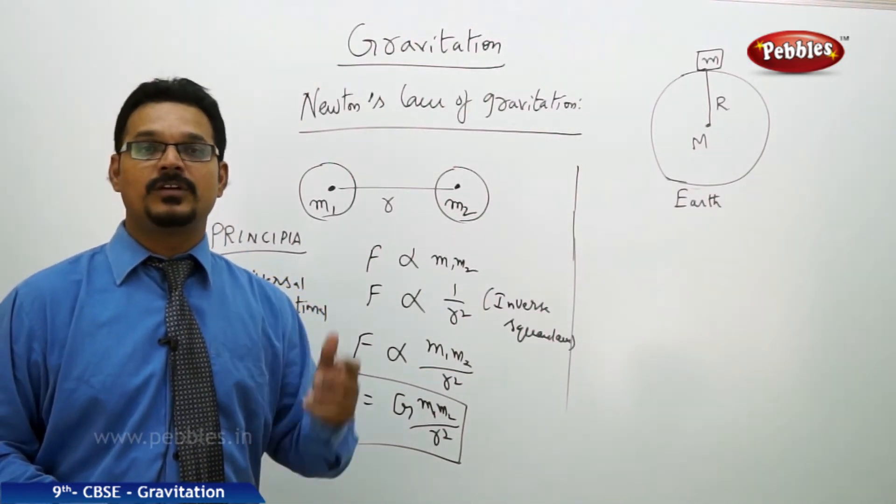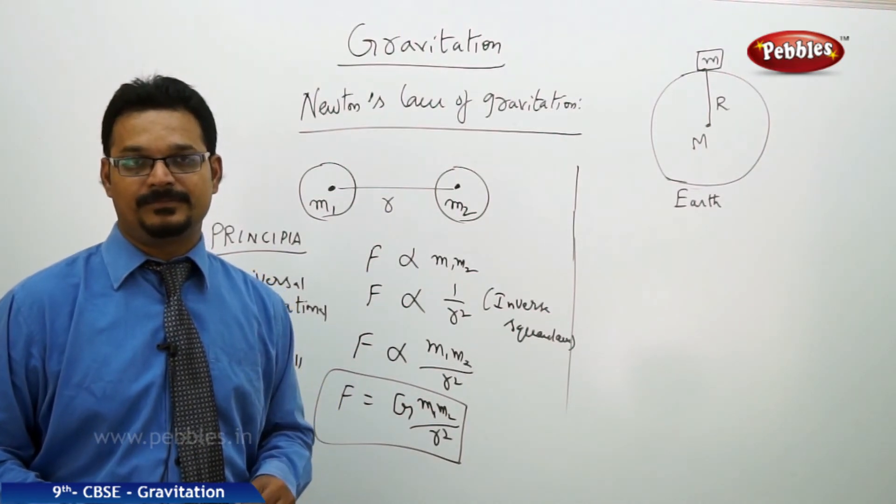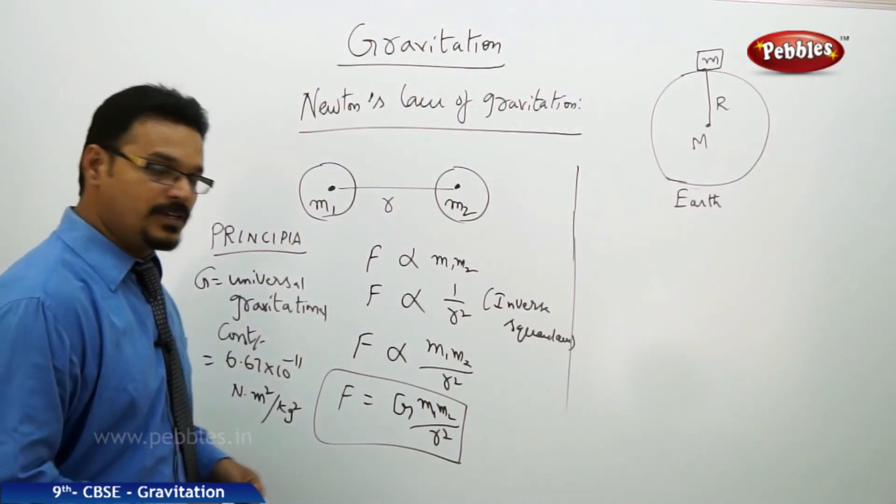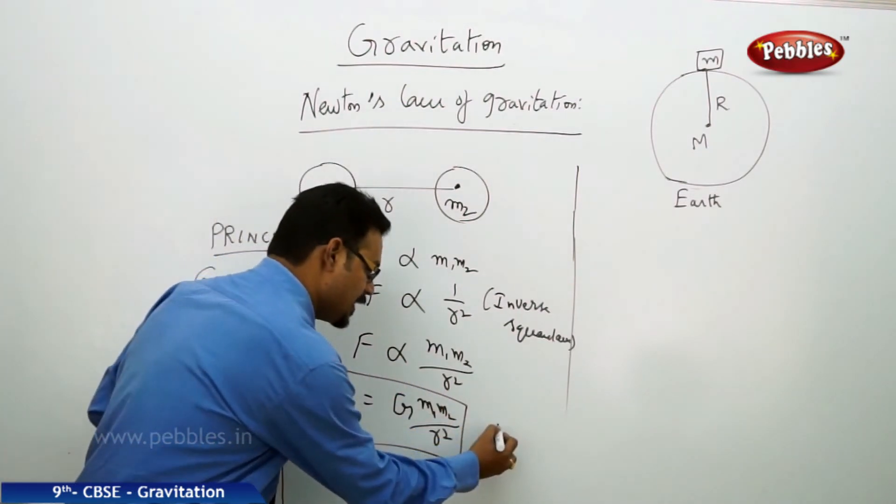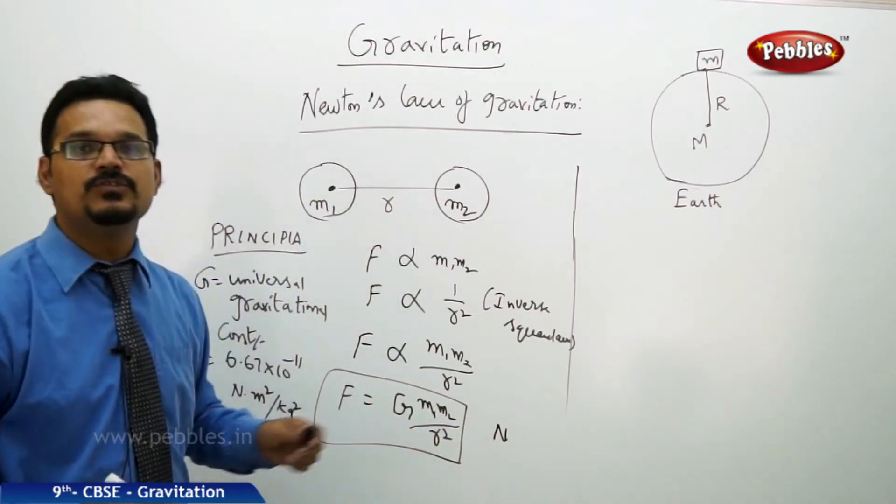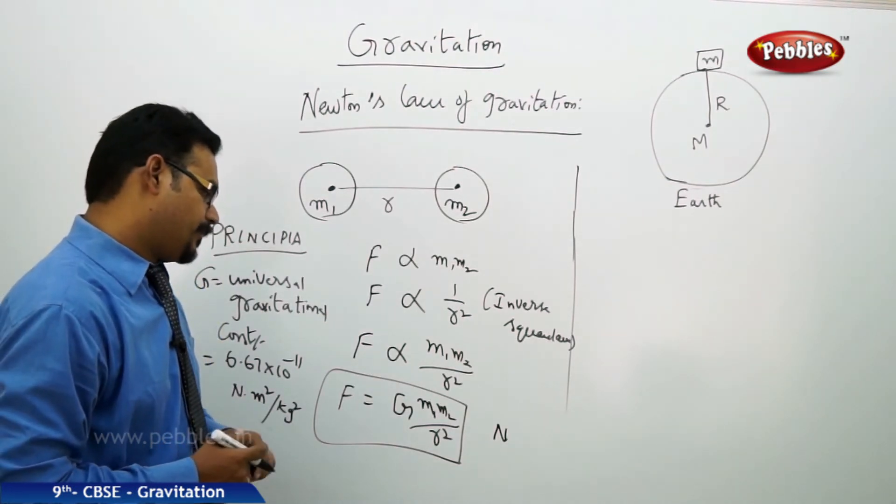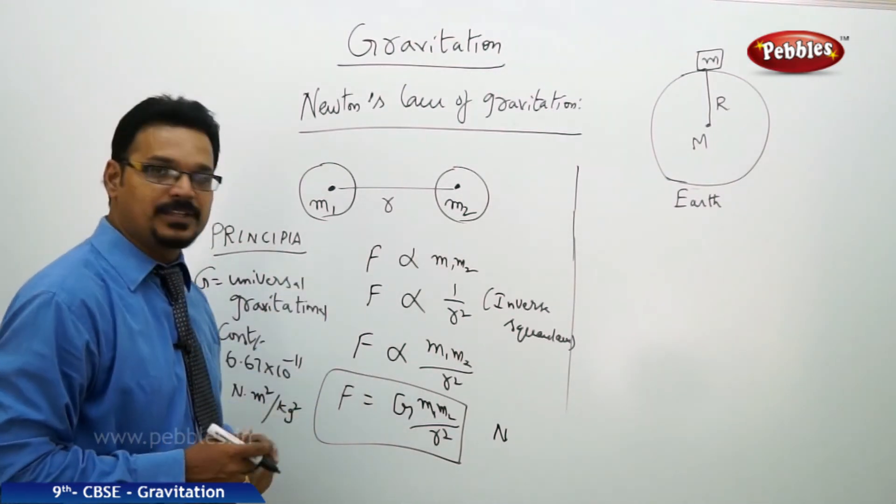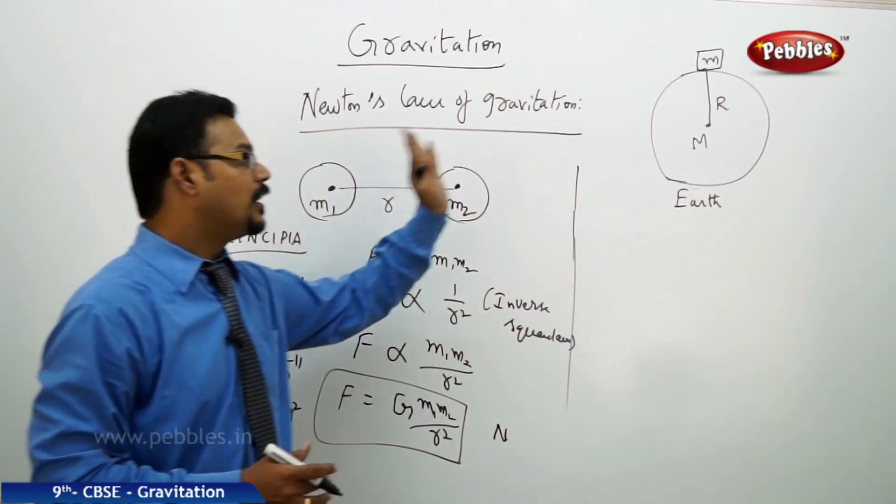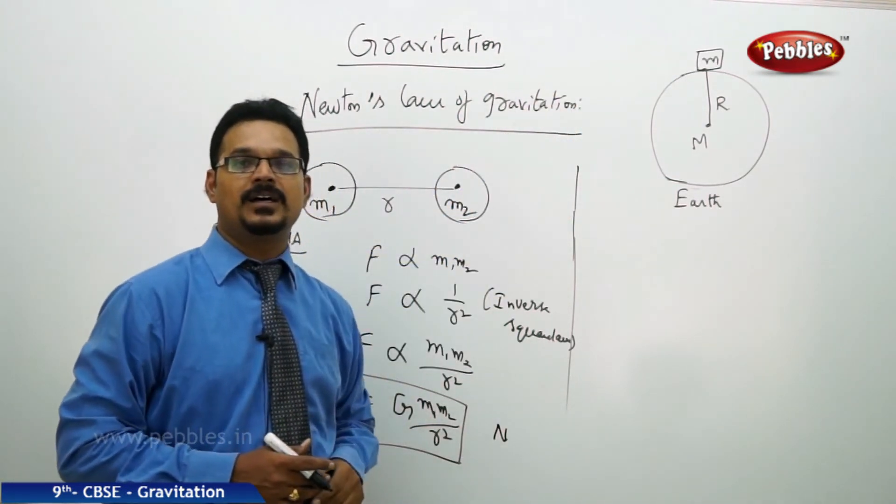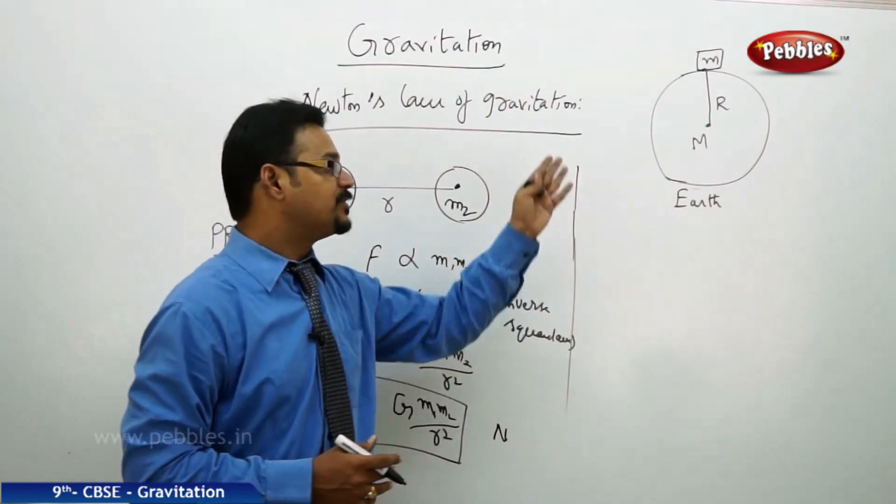Now come back to the concept: F equals G m1 m2 by r square. And as you know, the SI unit of force is Newton. Now this is for any two massive bodies. Now apply this formula specially for Earth and a mass on the surface of the Earth.